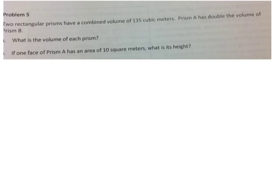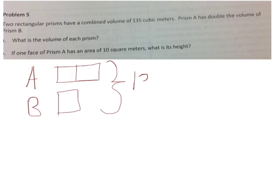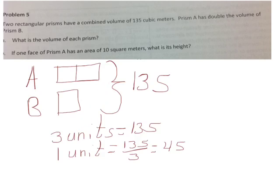Let's use a tape diagram to help us solve this. We know that we have prisms A and B, and we know that A has double the volume that B has. And we know that all together, the volume is 135. Using what we remember about tape diagrams, we know that three units equal 135. One unit would equal 135 divided by 3, or 45.